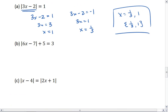Alright, how about 6x minus 7 plus 5 equals 3? Well, let's solve for the absolute value first. So we get the absolute value of 6x minus 7 equals negative 2. Okay, this is a problem.